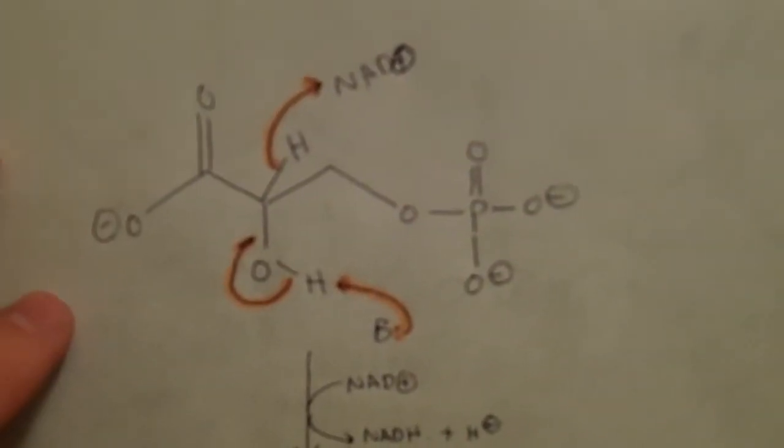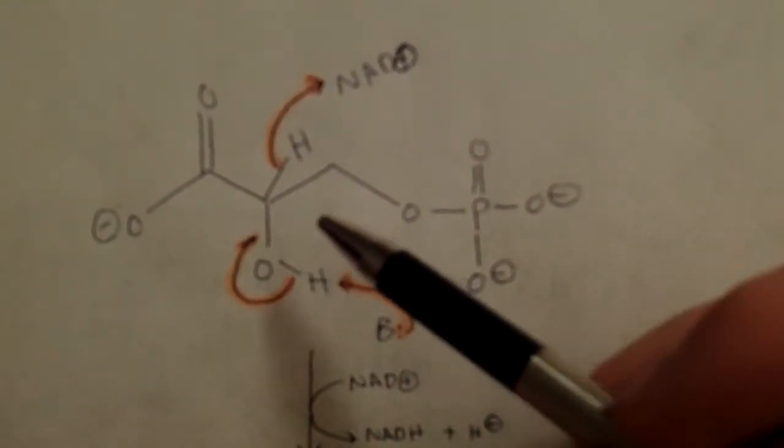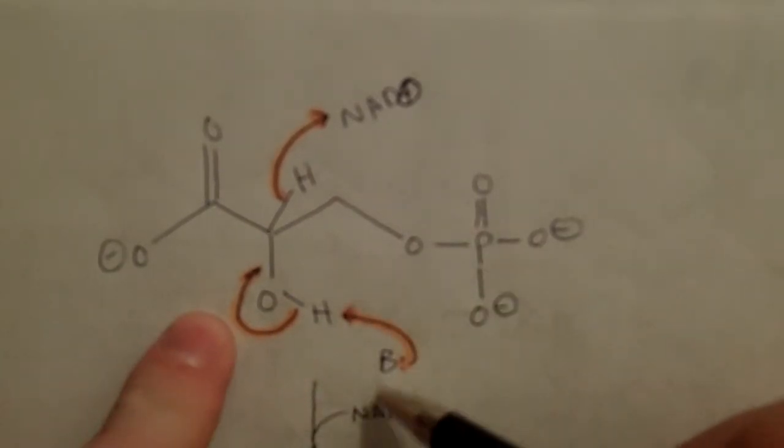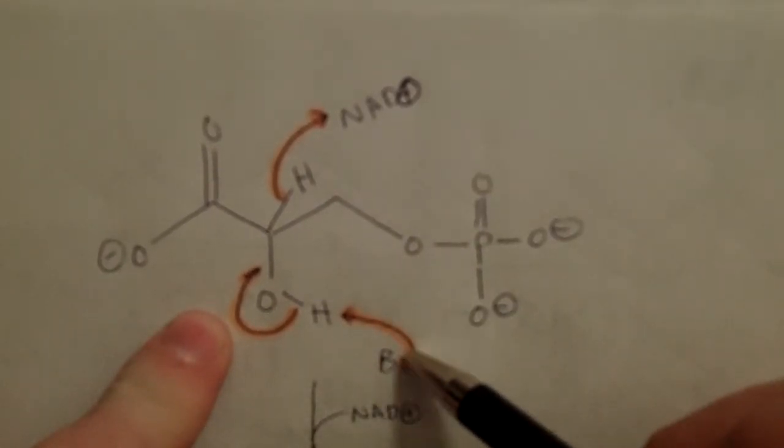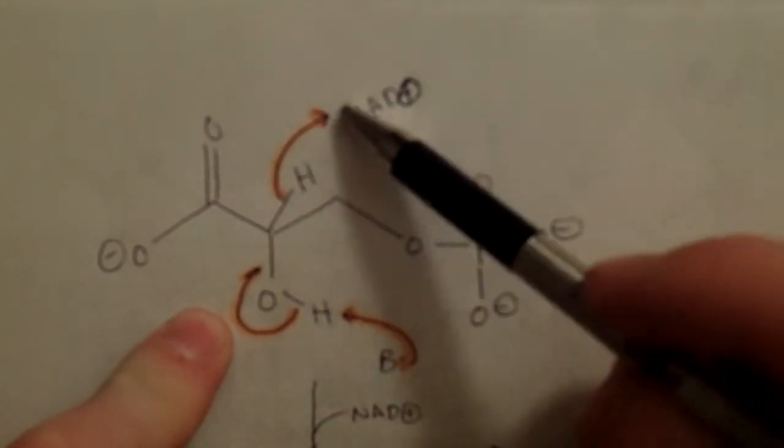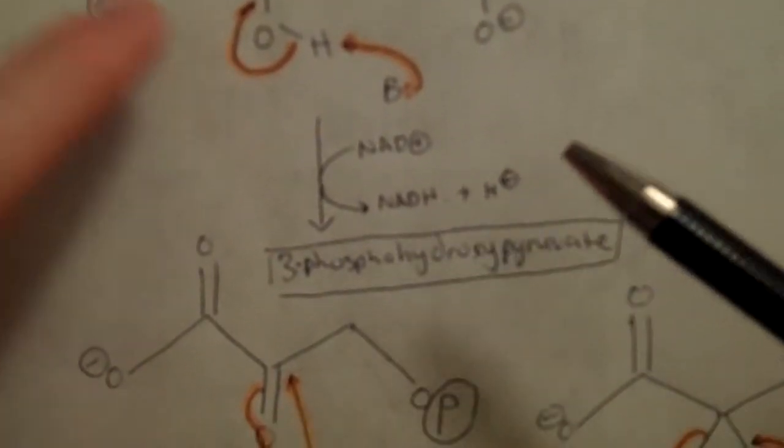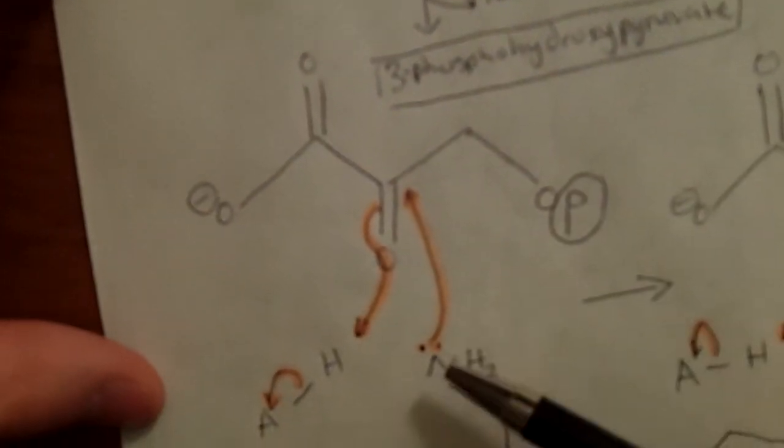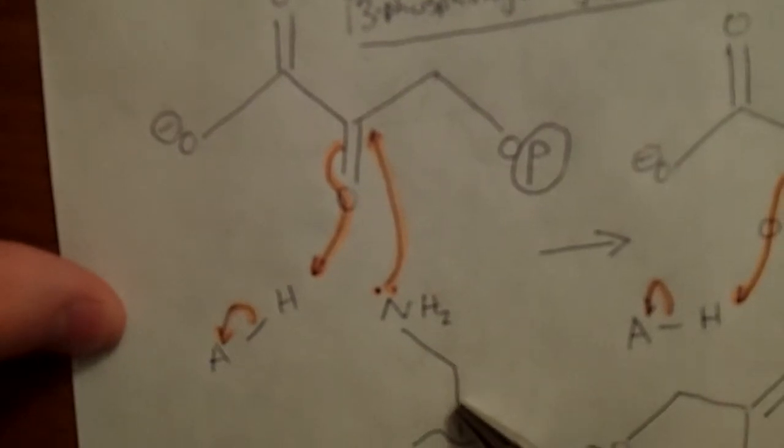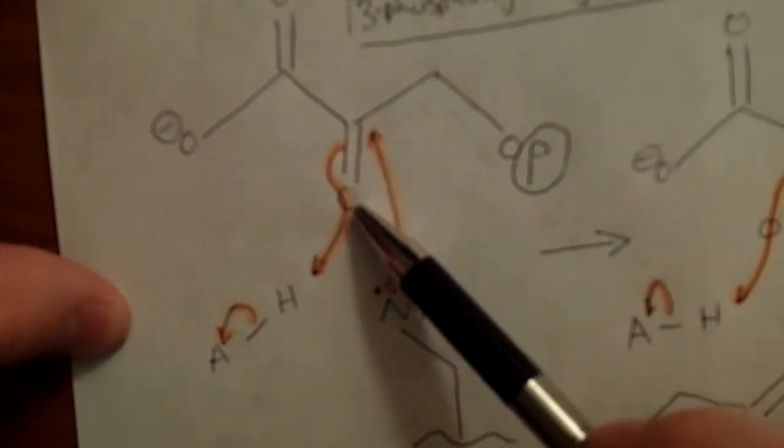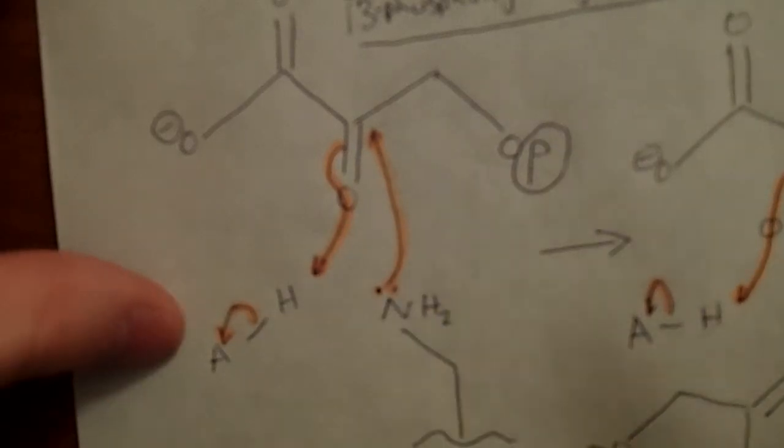As I said, pyridoxamine likes to deal with the keto acid forms. So first things first, we form that keto acid by displacing these electrons onto NAD+, forming NADH. Now the pyridoxamine comes in with those nice electrons, pushes in, this comes out and is protonated.